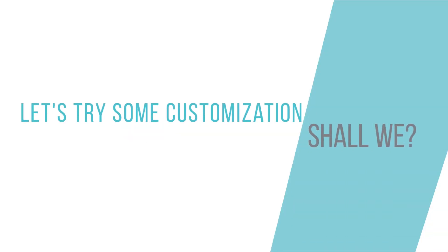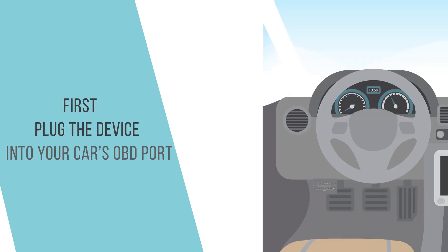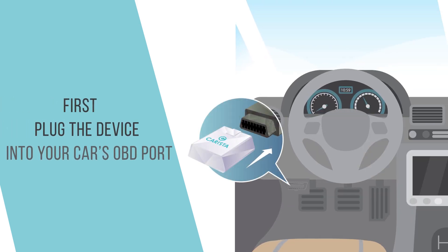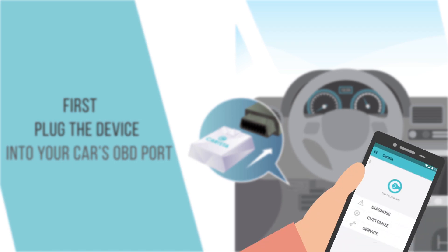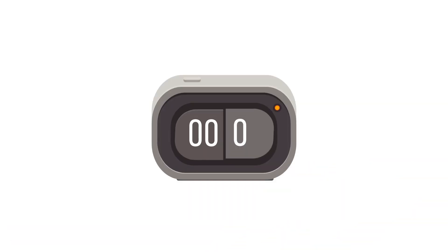Let's try some customization, shall we? First, plug the device into your car's OBD port, which is usually under the dash. Open the Carista app on your phone and press Customize.